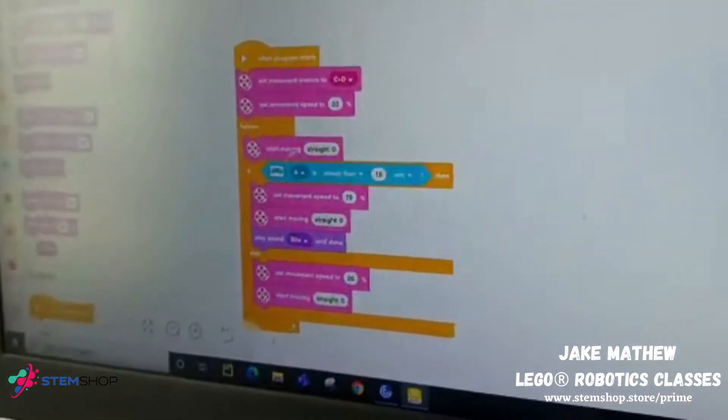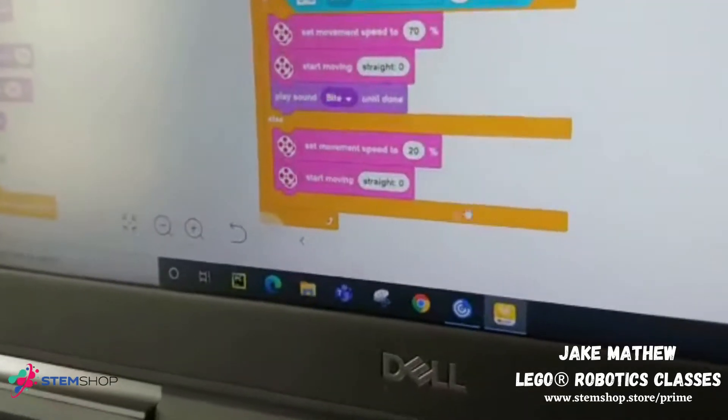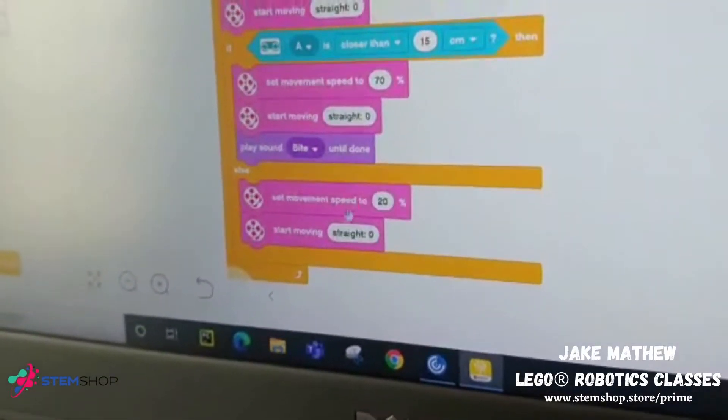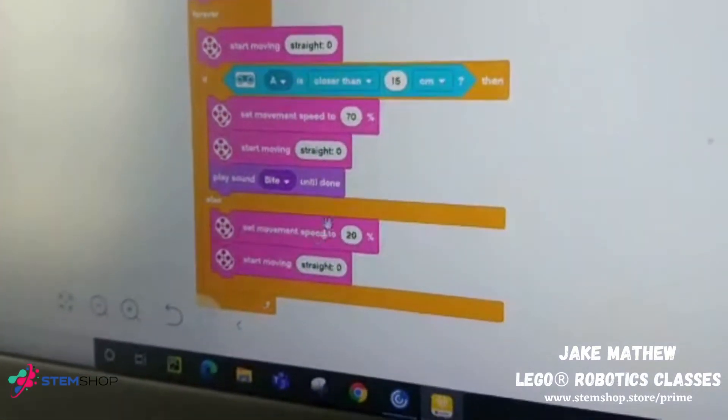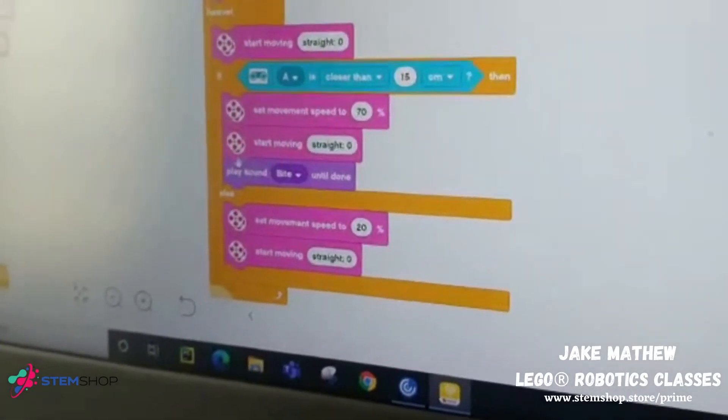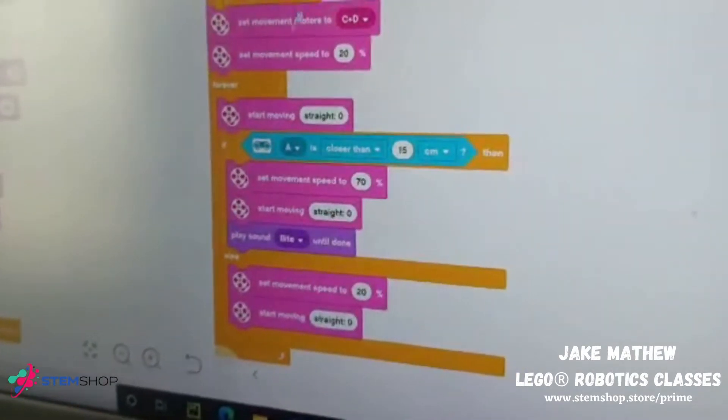So, then, the next one we need to put is set movement speed to 20% same and then, start moving, start zero. Same what we put it here, but no sound. Only one sound you need to put. So, the next one is, that's it.